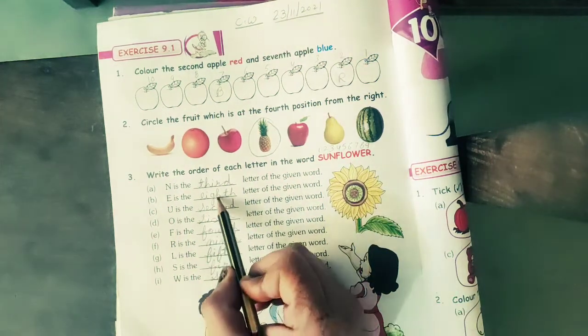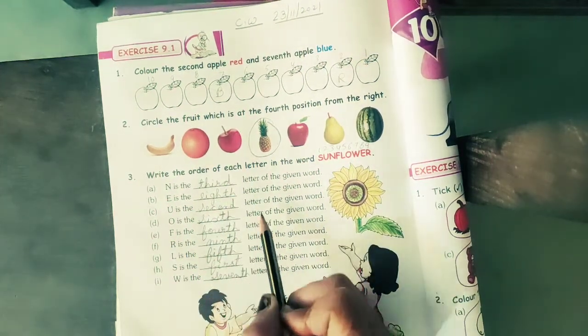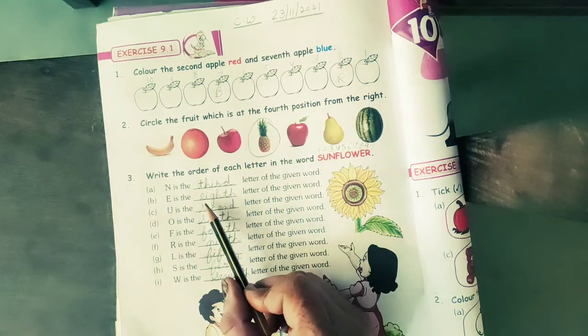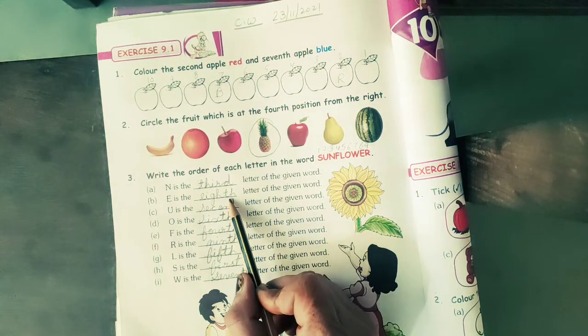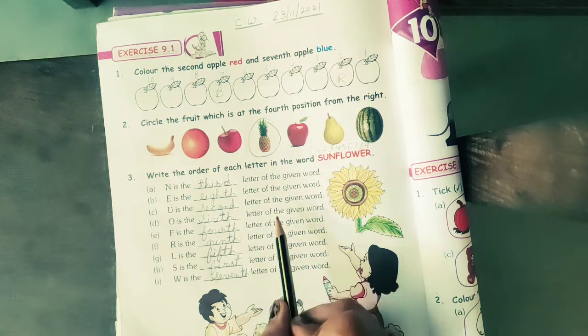The spelling of 8th is E, I, G, H, T, H.